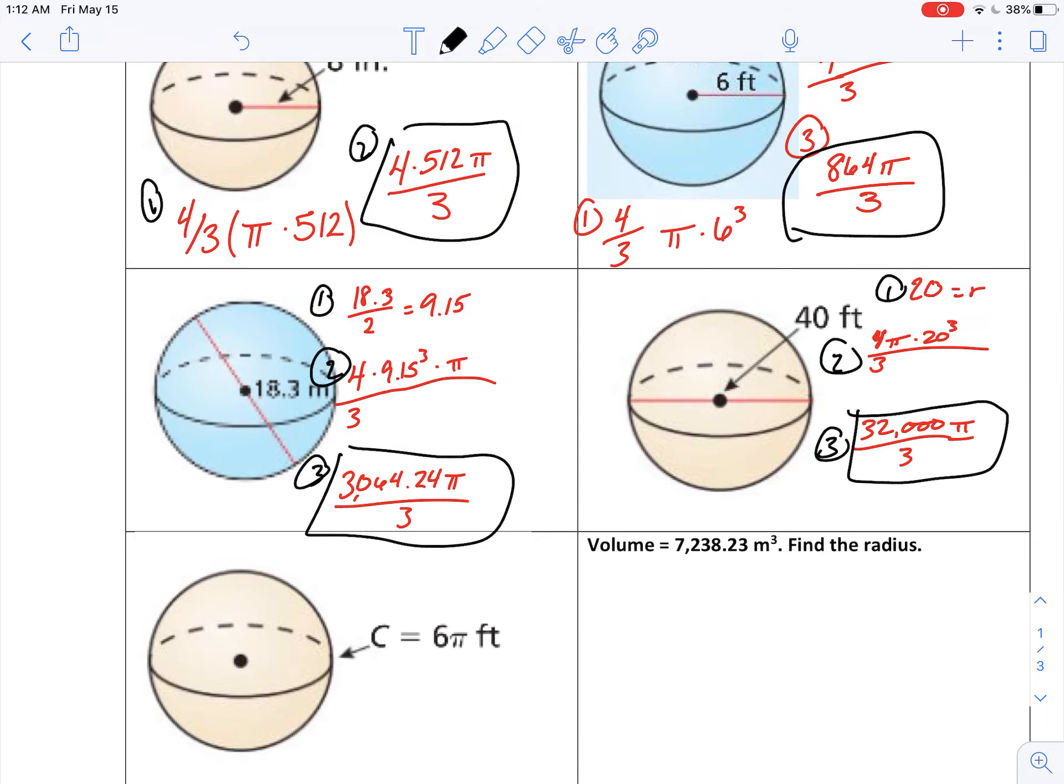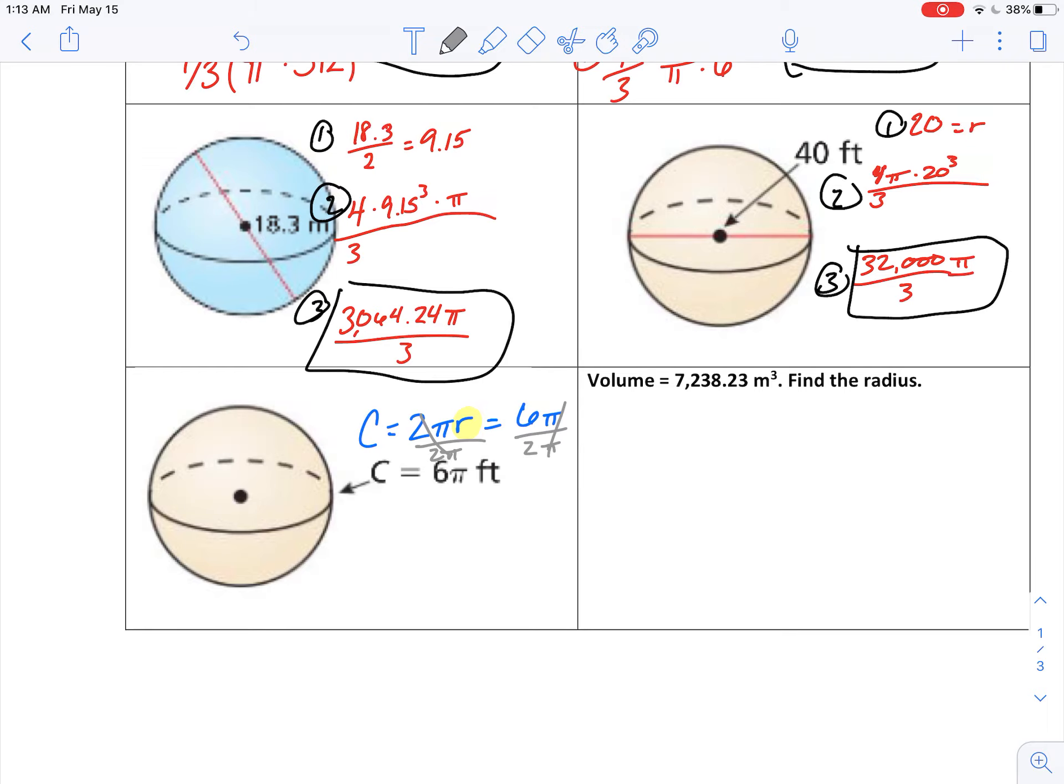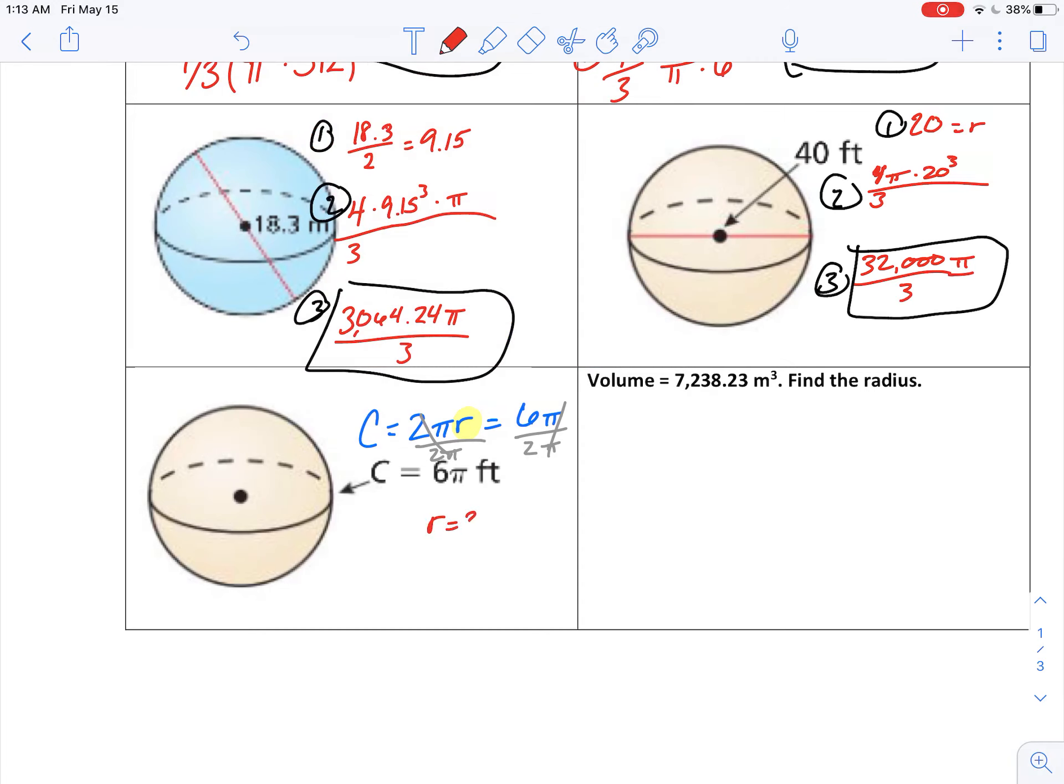Okay, and there are two more scenarios I want to look at. The first one here is what if I'm given a circumference? Well, circumference is 2 pi r. So I want to solve for r here. So what I can do is divide off a 2 pi from both sides, and 6 divided by 2 is 3. So my radius is 3 feet. And then just do the same thing. 4 thirds pi r cubed is going to be 36 pi over 3, or 12 pi.